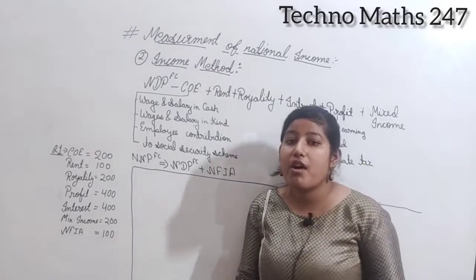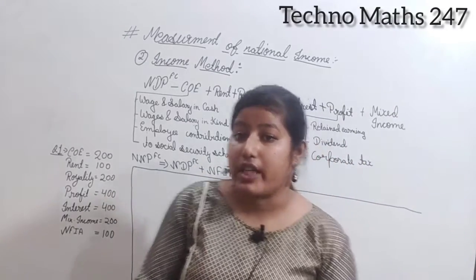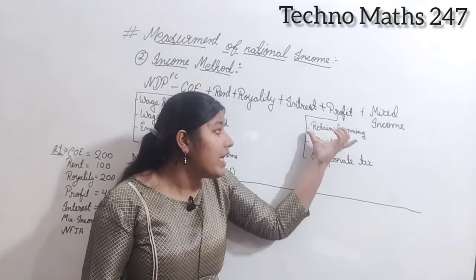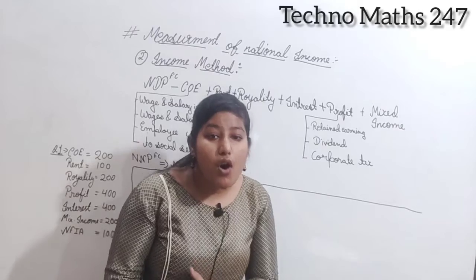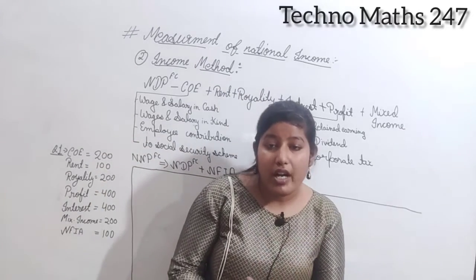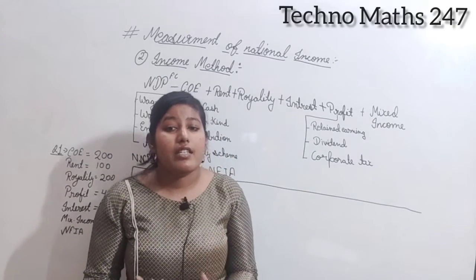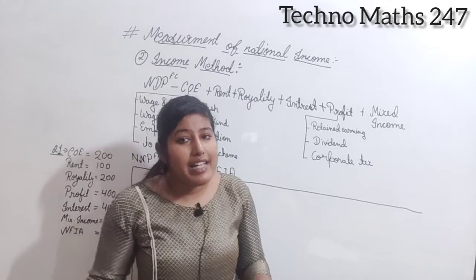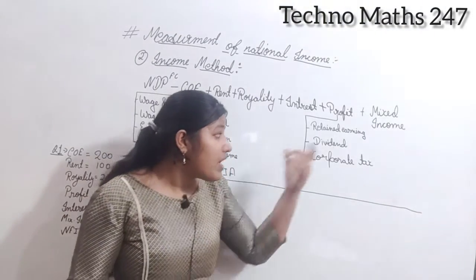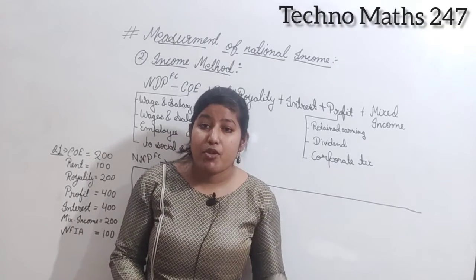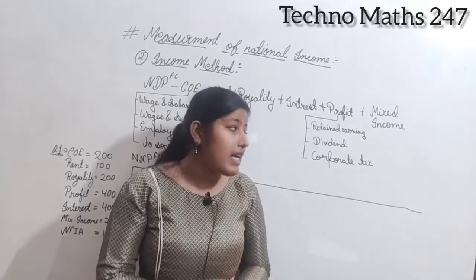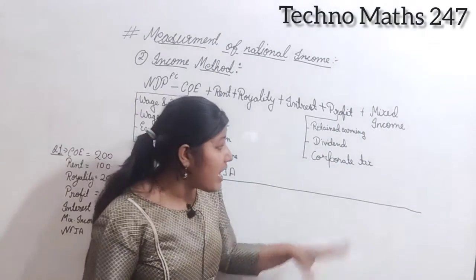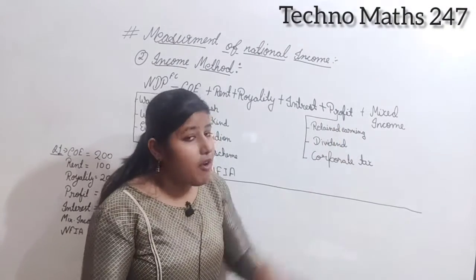Next is profit. If we are the owner of a firm, we don't receive a salary — we receive profit. Profit is divided into three parts: retained earning (also called undistributed profit), dividend (distributed profit — the profit shared among shareholders), and corporate tax. By adding these three, we can find out the total profit if profit is not directly given in the question.